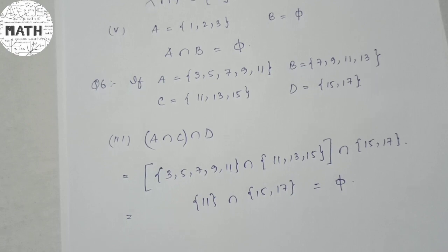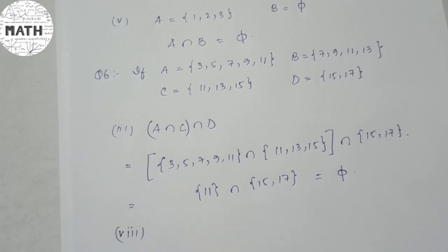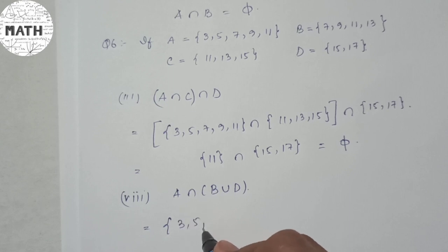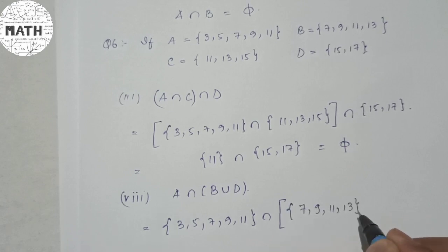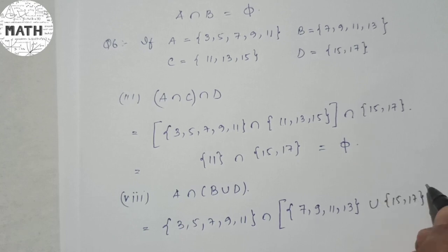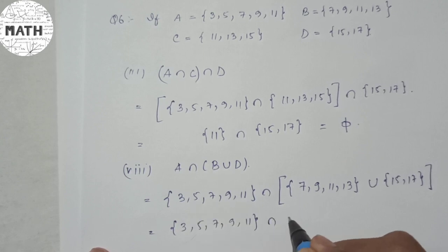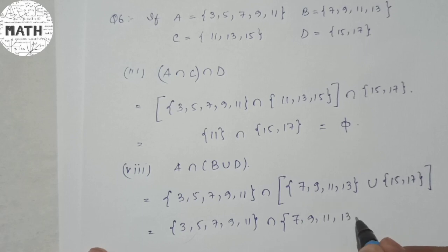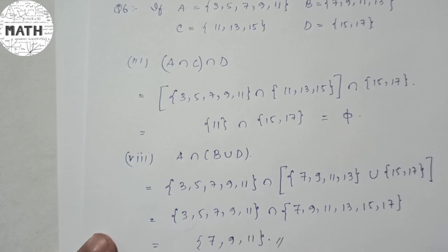For number 8, find A intersection (B union D). First compute B union D: combining B = {7, 9, 11, 13} and D = {15, 17} gives {7, 9, 11, 13, 15, 17}. Now find A intersection {7, 9, 11, 13, 15, 17}: the common elements between A = {3, 5, 7, 9, 11} and this set are 7, 9, and 11. So the answer is {7, 9, 11}.